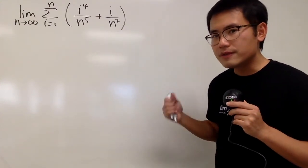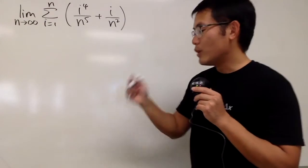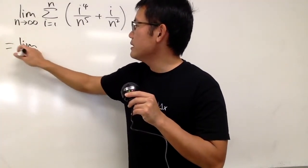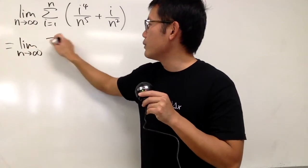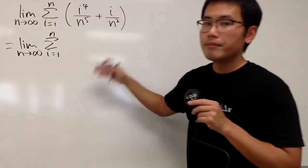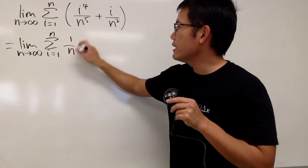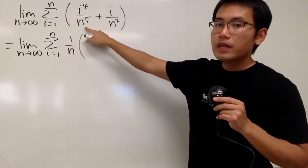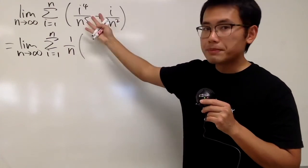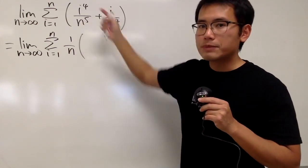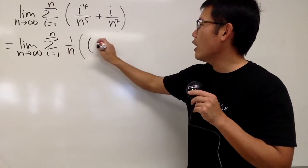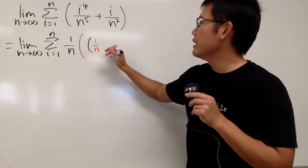So in fact, we can just factor out the n on the bottom — just n to the first power. Let me write it as the limit as n goes to infinity, and then we still have the sum, i goes from 1 to n, but we will factor out the 1 over n. If we factor out the n on the bottom, this will be n to the fourth power, and the top is i to the fourth power, so we can write this as i over n, like this.